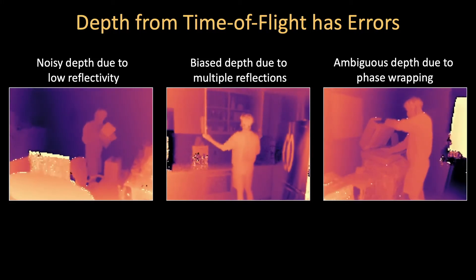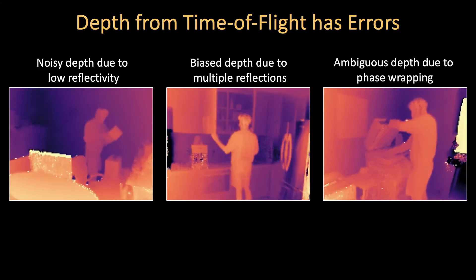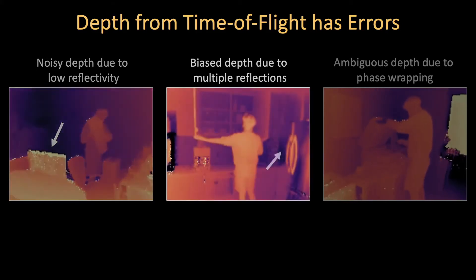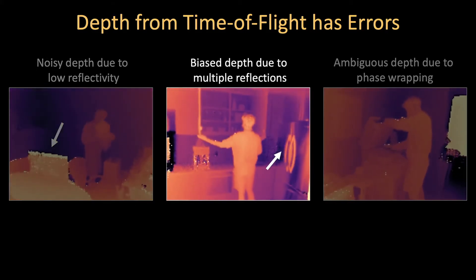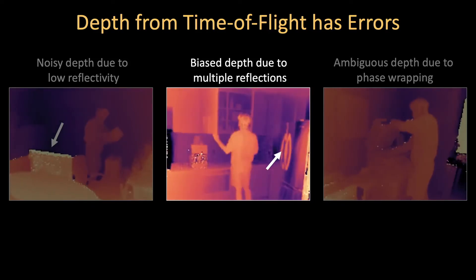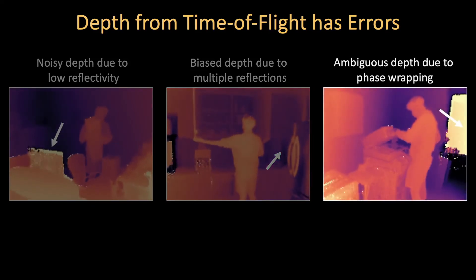Here is the output from a continuous-wave time-of-flight camera. Imaging dark objects that do not reflect much light results in noisy depth measurements. Specular surfaces reflect light from other areas of the scene, resulting in biased depth measurements. And large scenes may exceed the camera's unambiguous depth range, producing large depth errors.